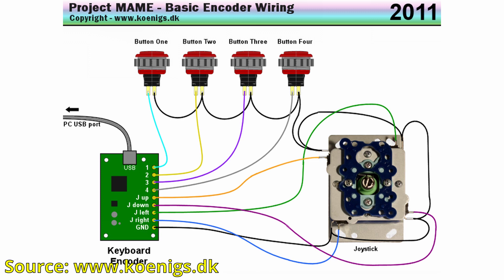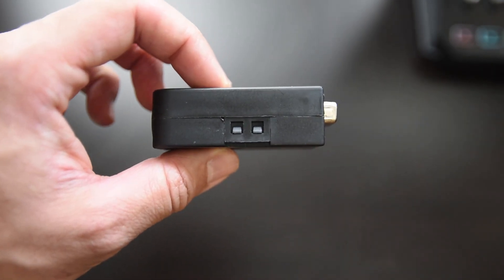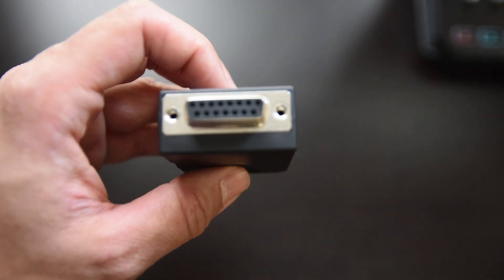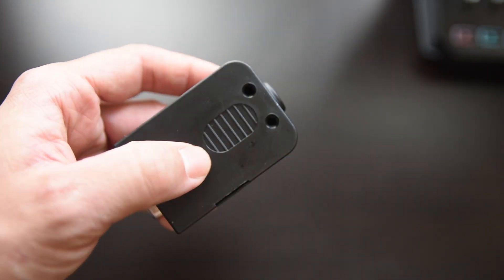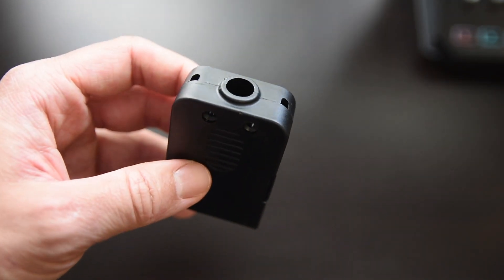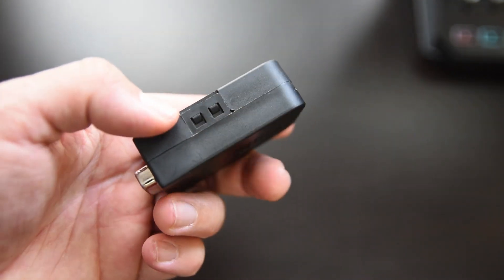After looking at the wiring, it was time to get the parts I needed. I ordered this DB15 adapter from Amazon that will help me plug the arcade stick into the Neo Geo. I will also need some wires for each of the controller inputs to plug them into the appropriate pins on the DB15 adapter.